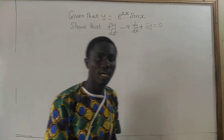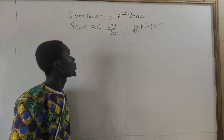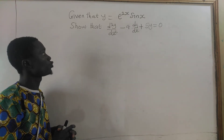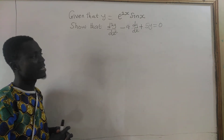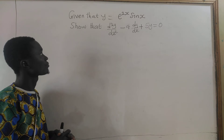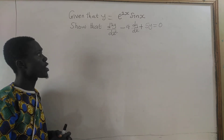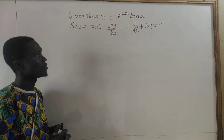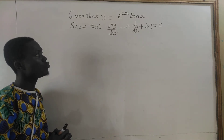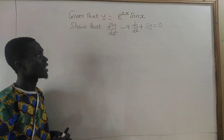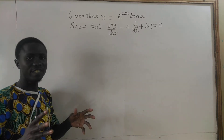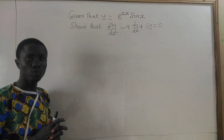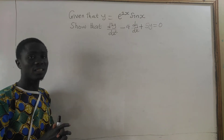In this lesson, we are going to look at this question: given that y equals e to the power 2x times sine of x, show that d²y/dx² minus 4 times dy/dx plus 5y equals 0. Join me as we go through this simple differentiation.